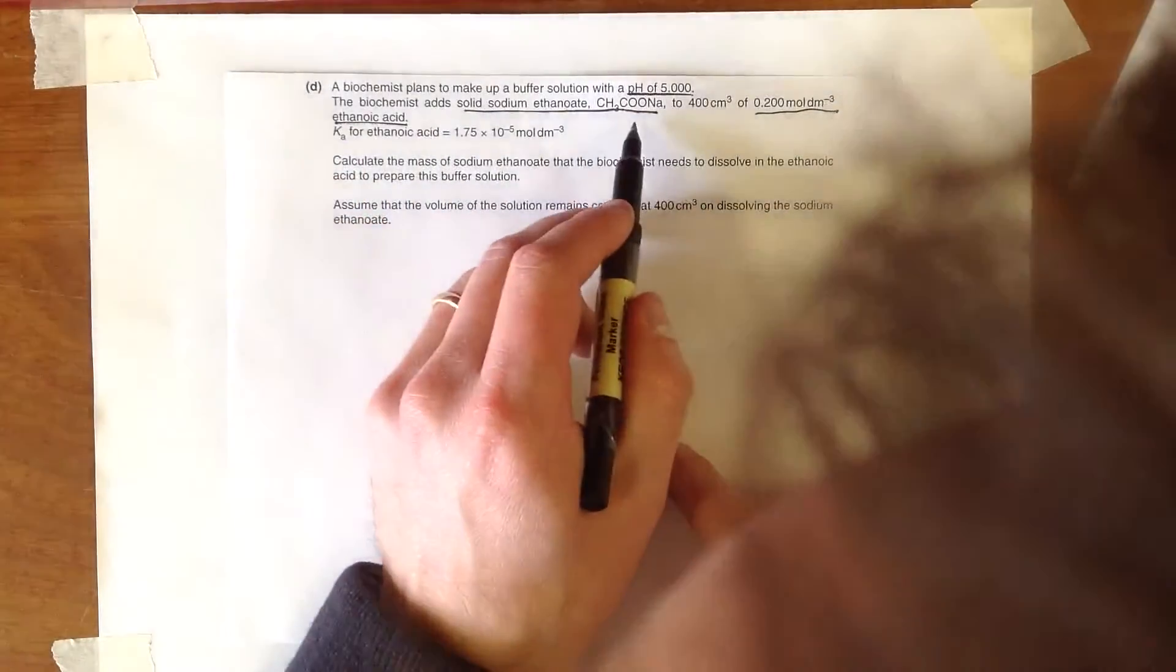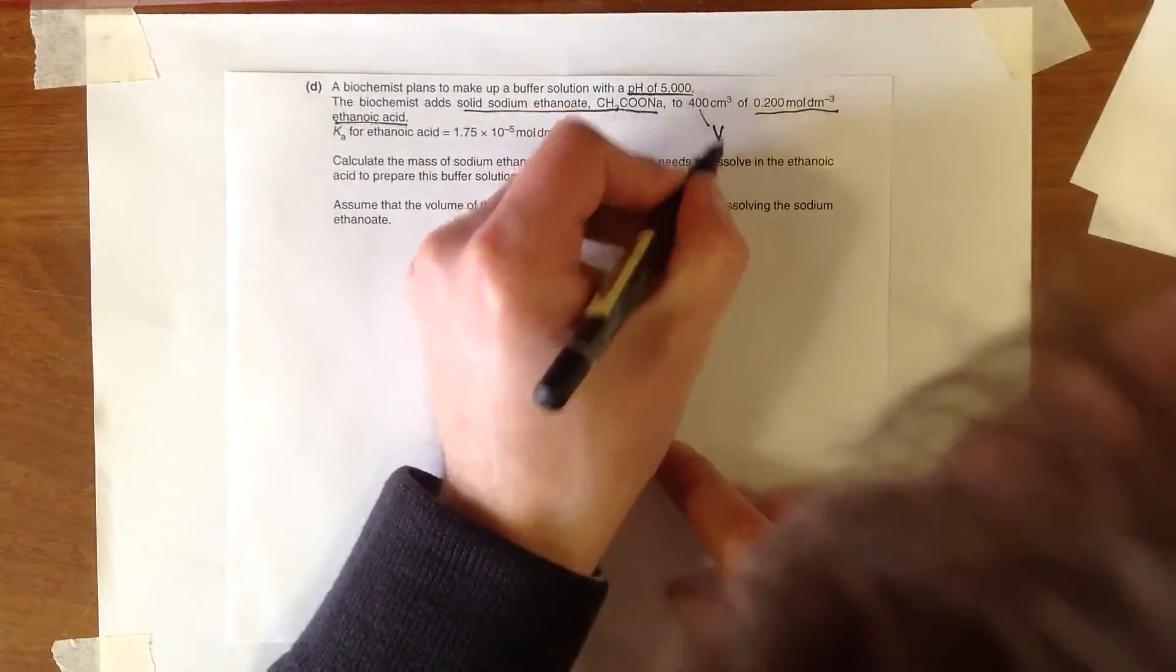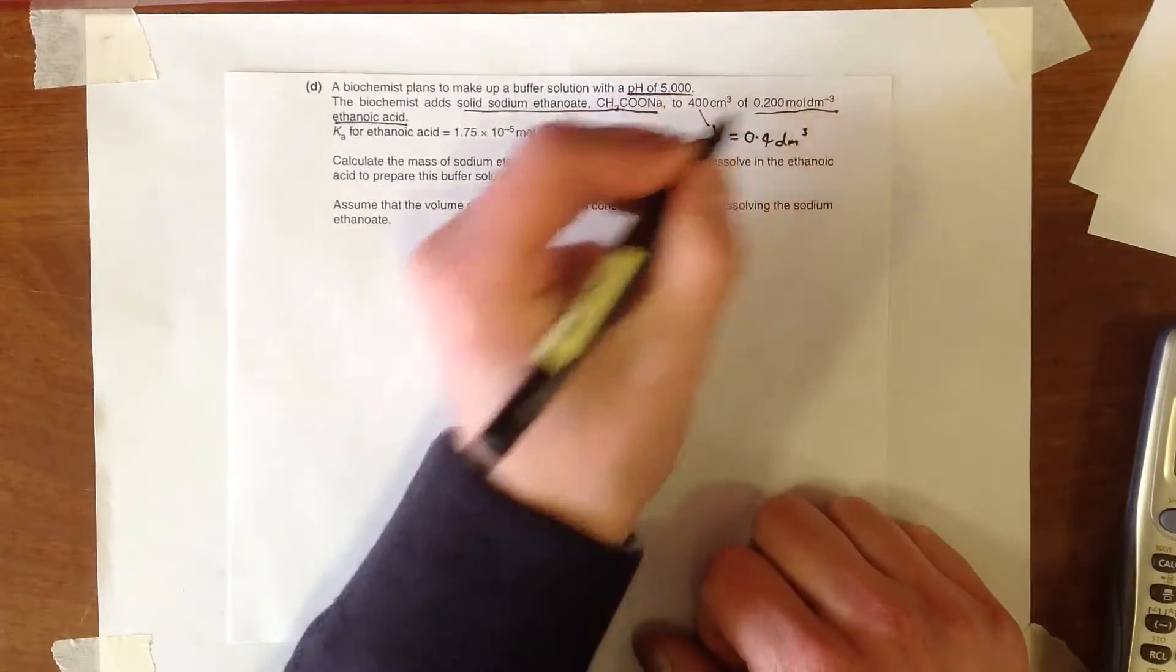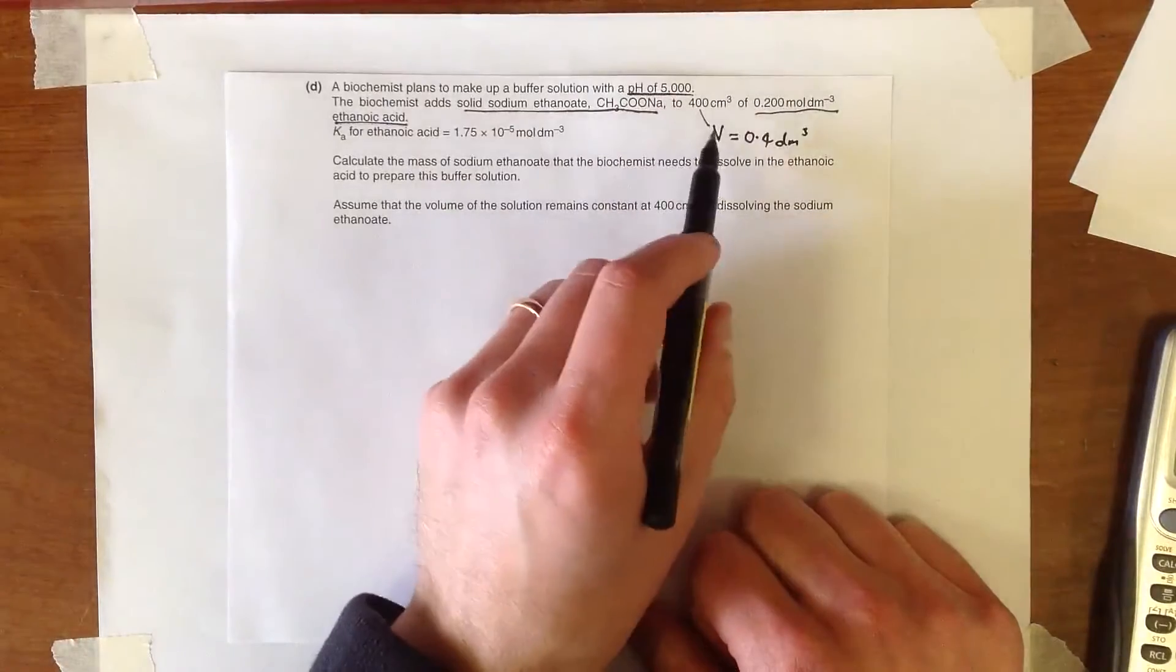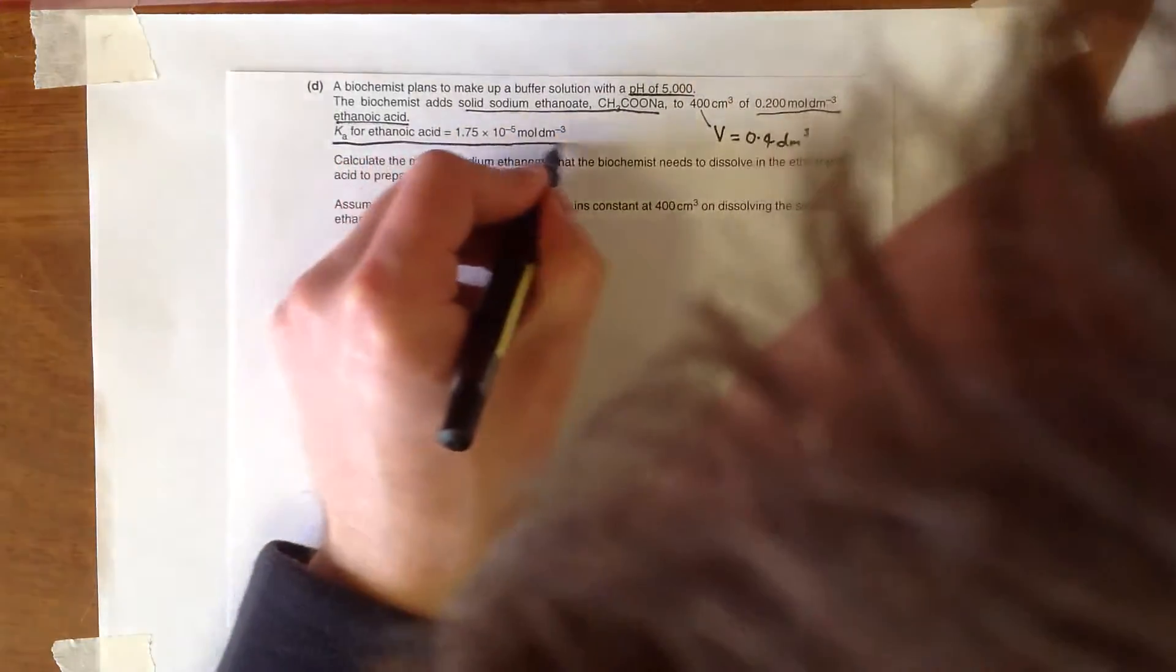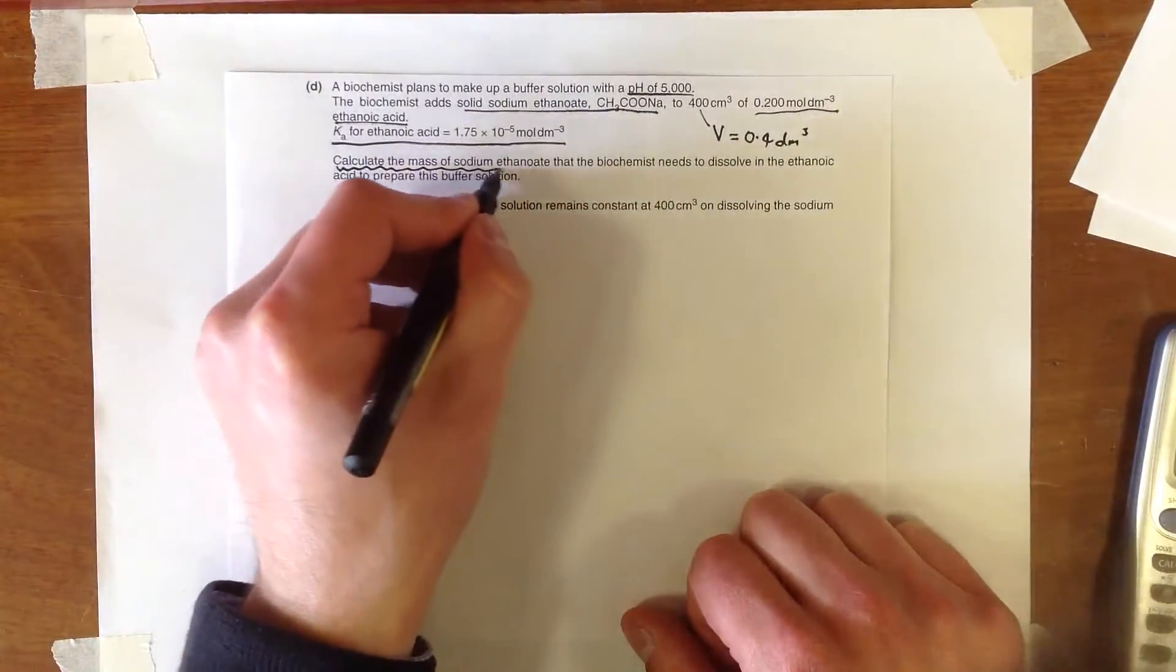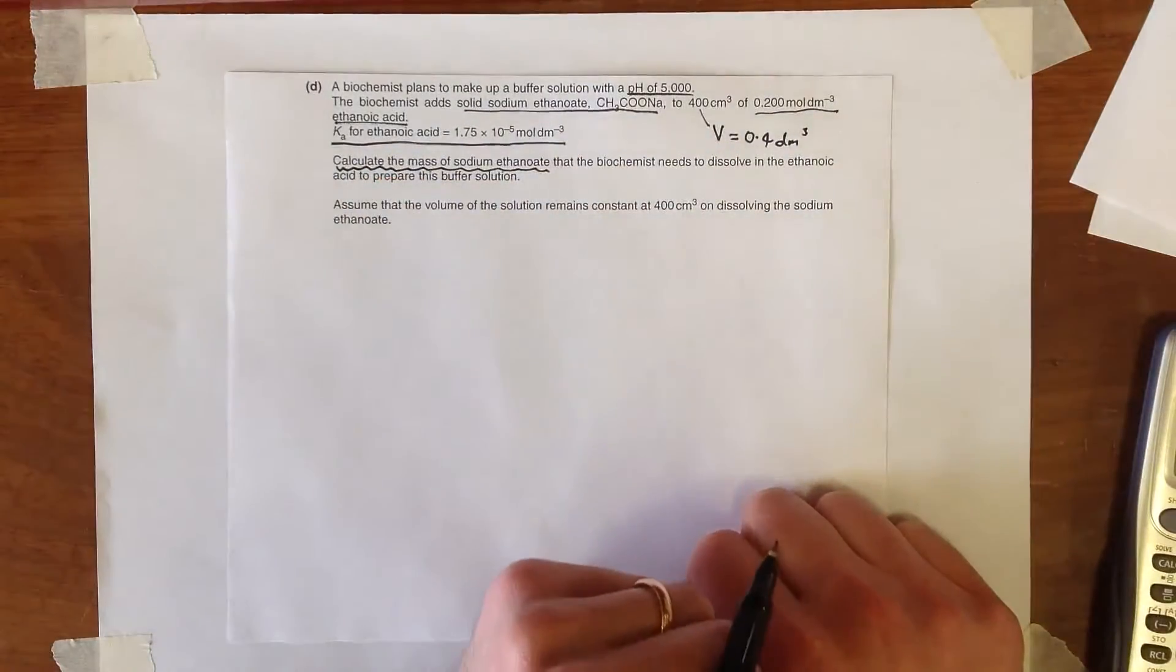And interestingly here we've added solid to a volume of 400 centimetres cubed, so we can turn that into decimetres cubed just to make our life easier. And we know that the Ka for ethanoic acid is given to us here, and we need to calculate the mass of sodium ethanoate that the biochemist needs to dissolve in the ethanoic acid to prepare this buffer solution.